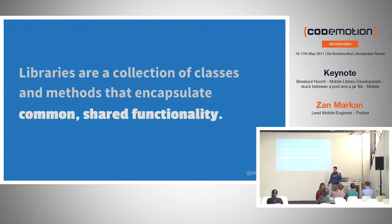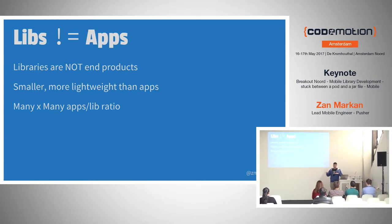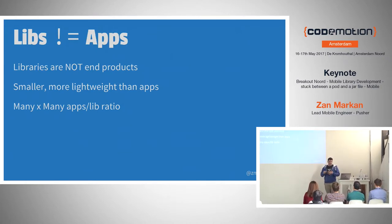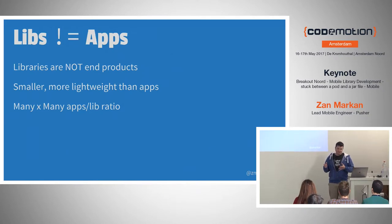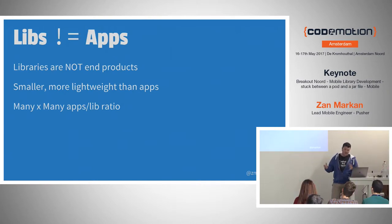So about libraries: what they are. They're essentially a bunch of classes and methods that encapsulate some shared functionality. If that functionality is not shared, they don't have a purpose. And what they're not — they're not apps. Apps are used by the end user, people using the phone interacting with them, and libraries are a lot smaller in scope usually. But that doesn't mean there are fewer libraries than apps, because you have libraries included in a bunch of apps — Alamofire on iOS is a classic example, or Retrofit on Android. An app usually includes a bunch of libraries, so we've got this many-to-many relationship.